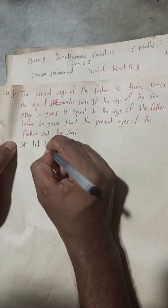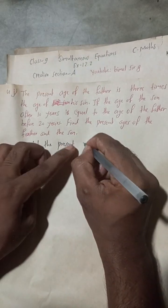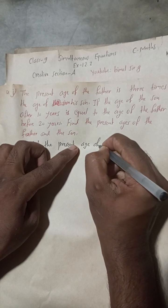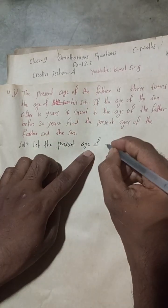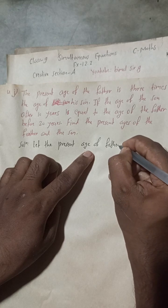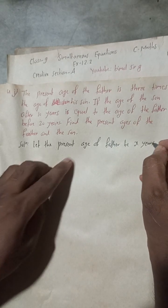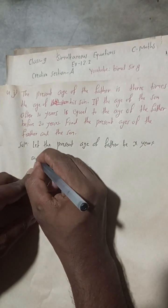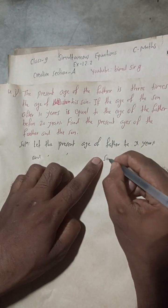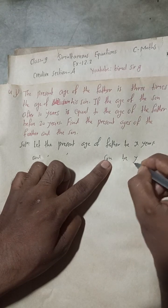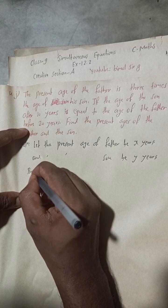Let the present age of the father be x years and the present age of the son be y years. Now by the first condition: